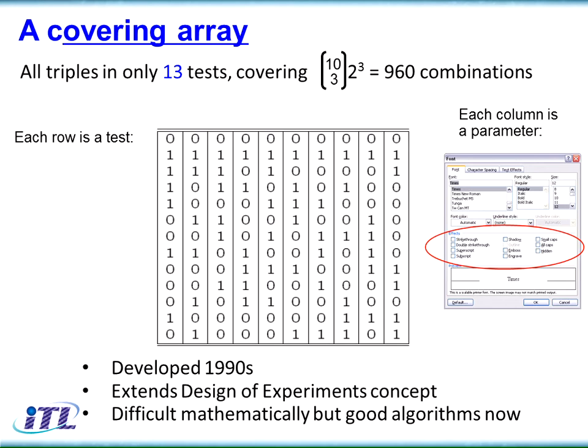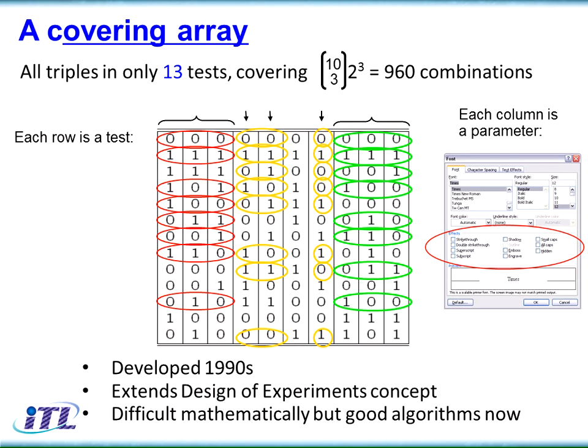This is what's known as a covering array — a particular type of matrix. The theory behind it was developed in the 1990s and is fairly simple to understand. The key property is that any three columns picked in any order contain all possible three-way combinations of those values. With binary values, there are eight possibilities. If you look in any three columns picked in any order — left to right, right to left, inside out — you'll find all combinations: 0,0,0 / 0,0,1 / 0,1,0 / 1,0,0 etc. It's a very hard problem mathematically, but there are good algorithms, and the project has developed some of these.